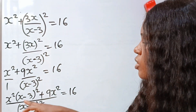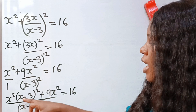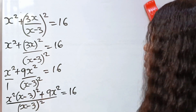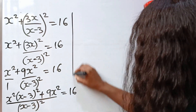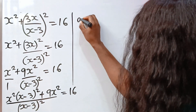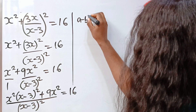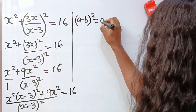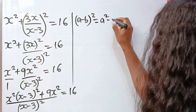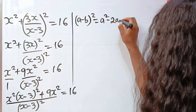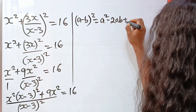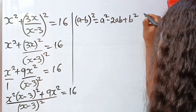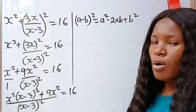Now let us note that A minus B squared is equal to A squared minus 2AB plus B squared.